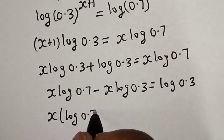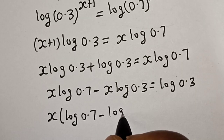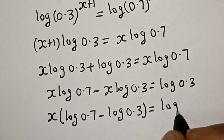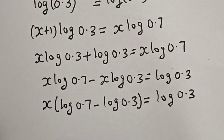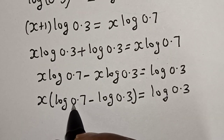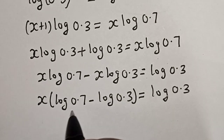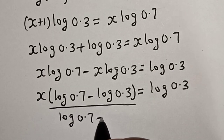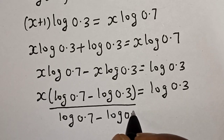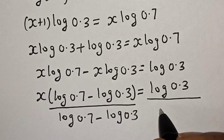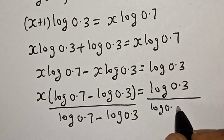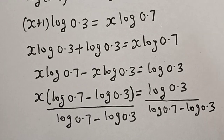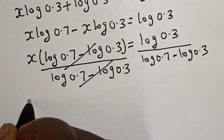Now s is common, so let's factor it out: s times (log 0.7 minus log 0.3) is equal to log 0.3. Then let's divide both sides by (log 0.7 minus log 0.3). The denominator cancels on the left side.